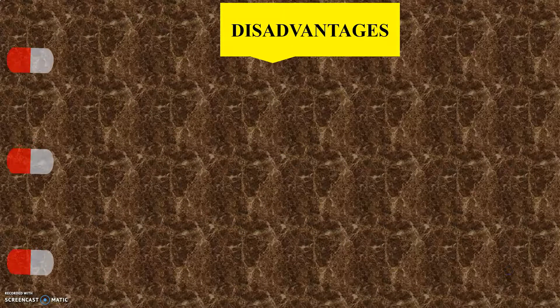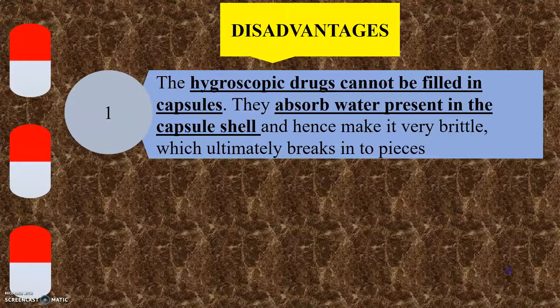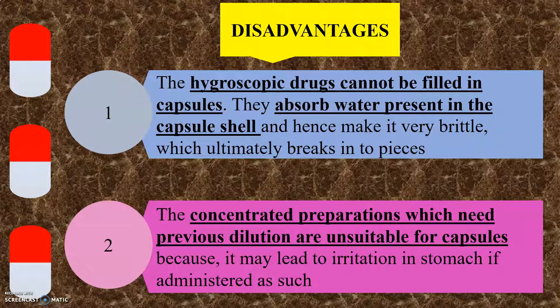Now let us see the disadvantages of capsules. The first disadvantage is that hygroscopic drugs cannot be filled in capsules — they absorb water present in the capsule shell and hence make it very brittle, which ultimately breaks into pieces. The next disadvantage is that concentrated preparations which need previous dilution are unsuitable for capsules, because it may lead to irritation in the stomach if administered as such.